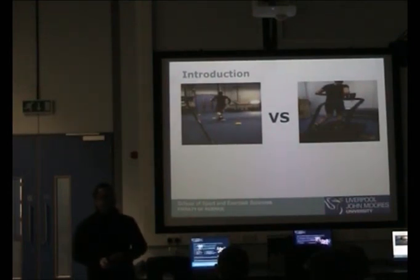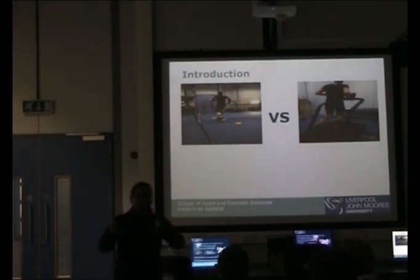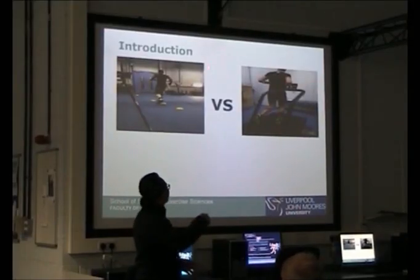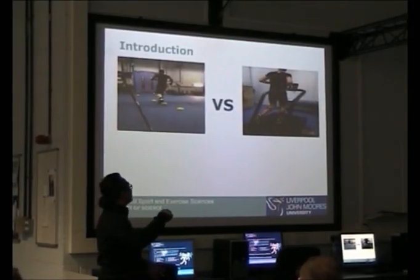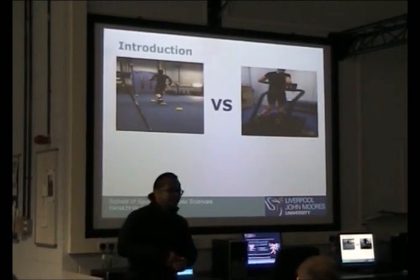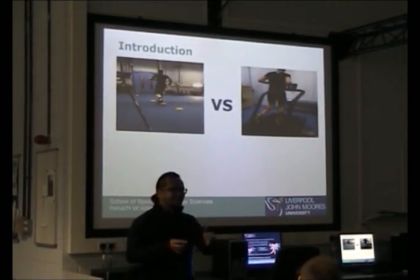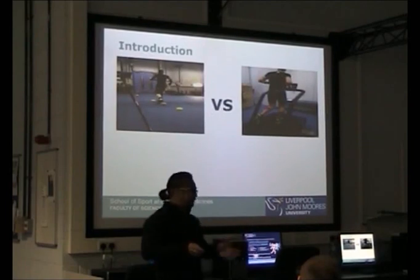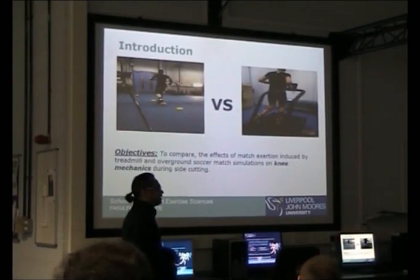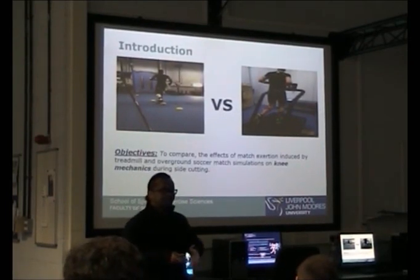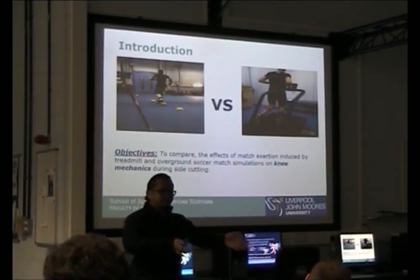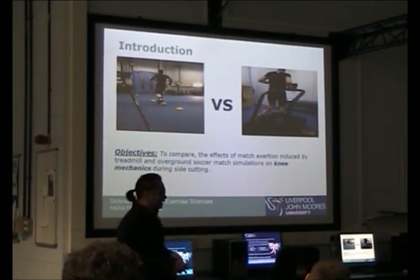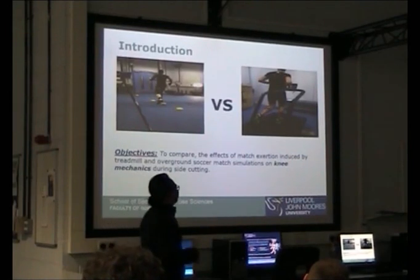Most studies have looked at the effect of match simulations on markers of injuries using either a treadmill or an overground match simulation. However, none of these studies have directly compared between both simulations. Therefore, the objective of this study is to compare the effect of a treadmill versus an overground match simulation on the biomechanical risk factors of ACL injury.